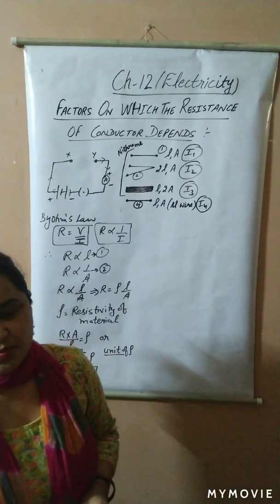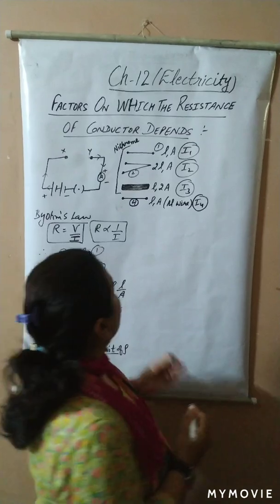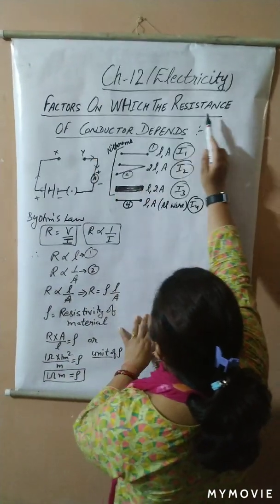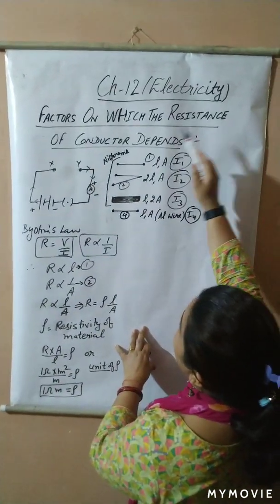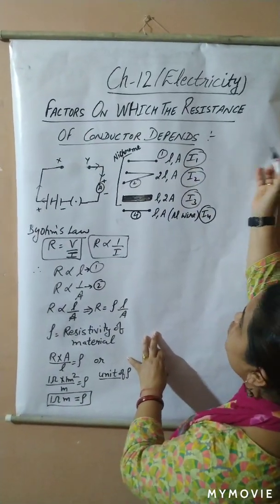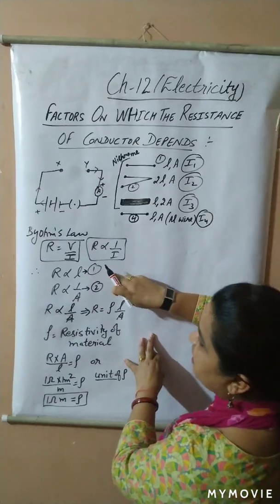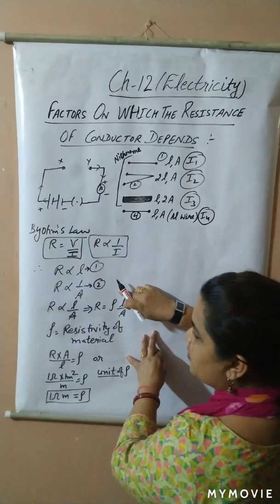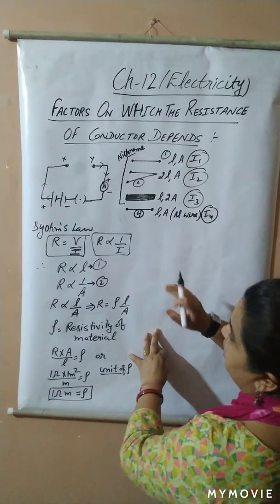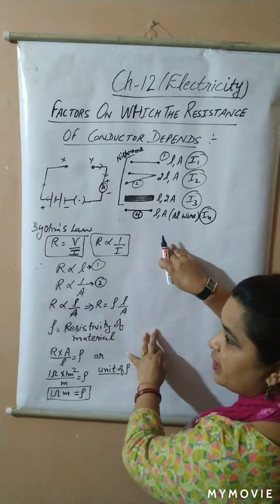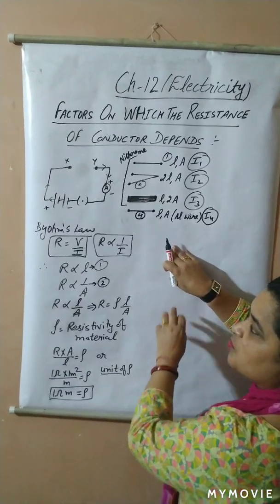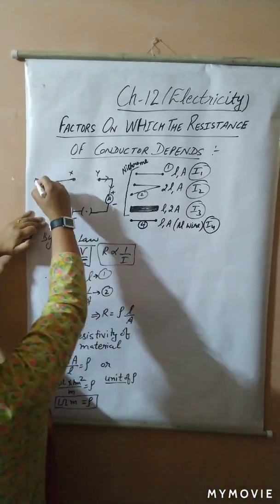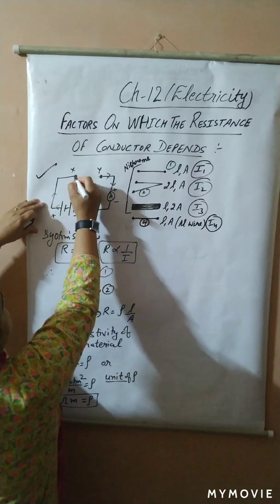Let's come to the topic: factors on which resistance depends. In the last class I verbally explained to you that R is directly proportional to length and inversely proportional to area. Today's lecture I am going to explain in detail, so for that we have made a circuit here.